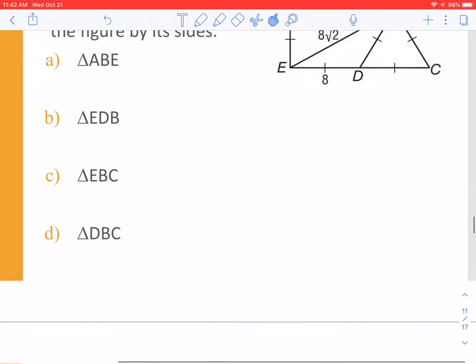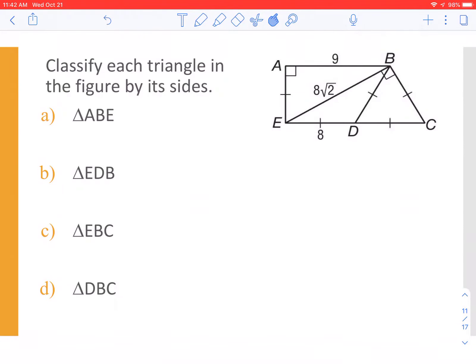We're going to do one more here by its sides. Same thing. What I would maybe do is pause the video here and practice yourself. But I will, again, do these for you. So A, B, E. Nine and eight root two are not the same. And then, they have a congruent symbol. So none of the sides are the same. That's a scalene.